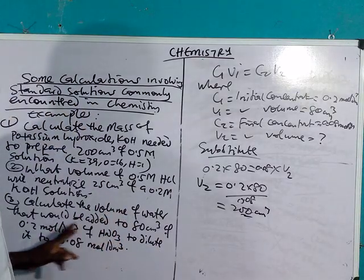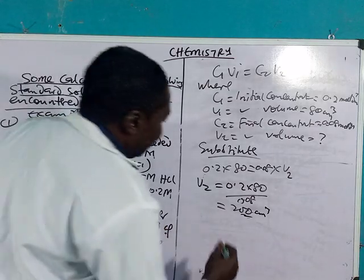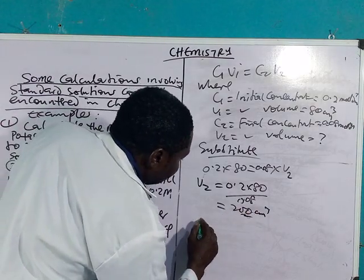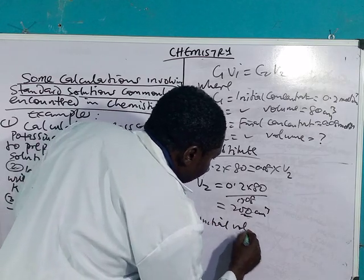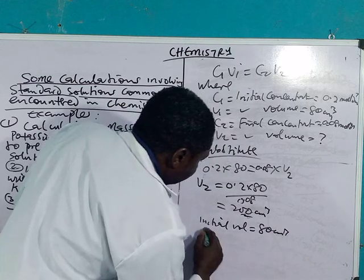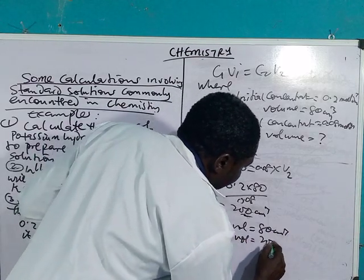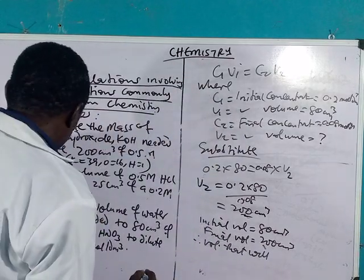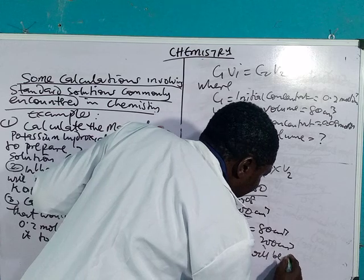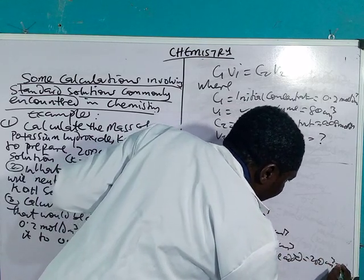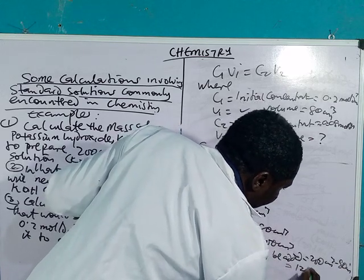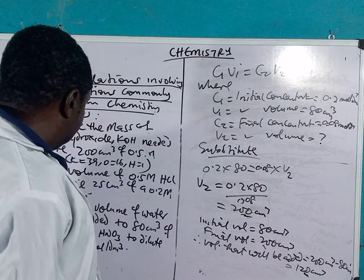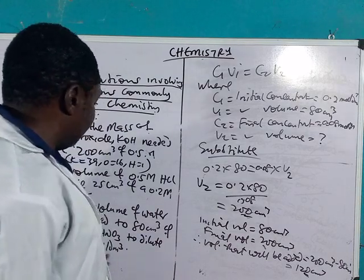When the question says calculate the volume of water that will be added to 80 cm³, you remove the initial from this. Whatever volume of water you have is what will be added to this. So initial volume is 80 cm³. The final volume is 200 cm³. Therefore, volume that will be added is 200 cm³ minus 80 cm³, which gives you 120 cm³. So this is the volume that must be added to the 80 cm³ to dilute it to 0.08 mole per dm³.